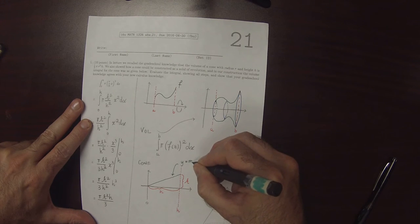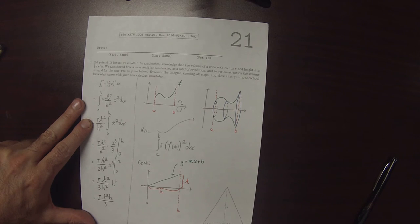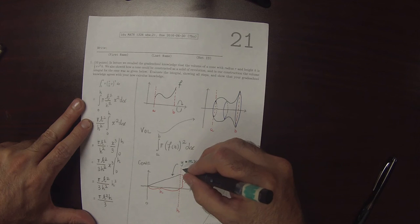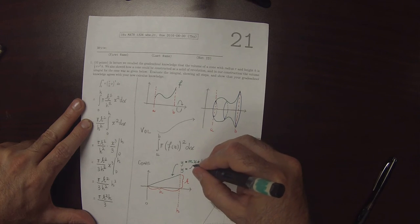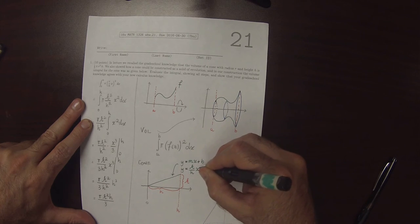y is mx plus b. And b is the y-intercept, and we observe that the y-intercept is 0, so b is 0. And m is the slope, which is rise over run, so m is r over h. So that y is equal to r over h, x.